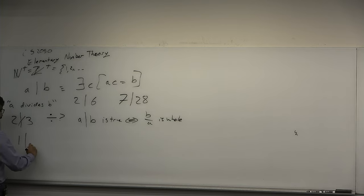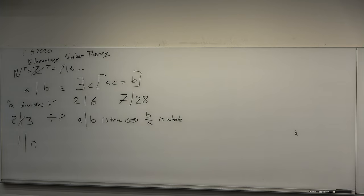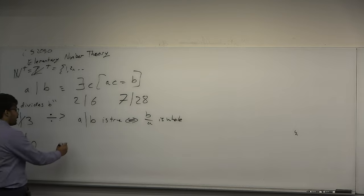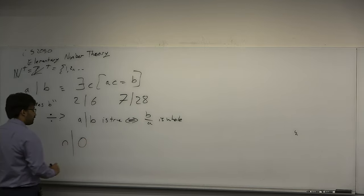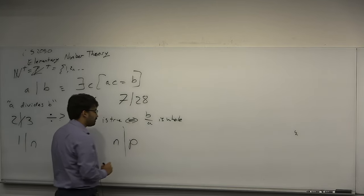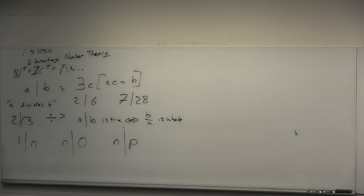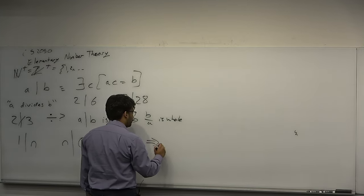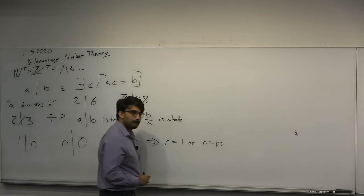Pop quiz: for what n does one divide into n? All n. Going back to the formal definition, you choose a equals one and b equals n, then you choose c equals n, so n equals n — done. For what numbers n does n divide into zero? All n as well — you choose c equals zero. All numbers divide into zero. What if p is a prime number — what possible n can divide into p? The only divisors of a prime are one and itself, by definition. So if n divides into p, then n equals one or n equals p.